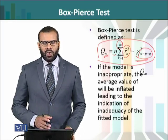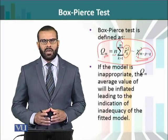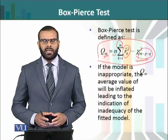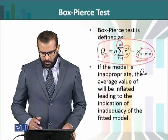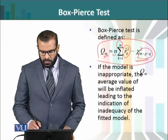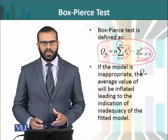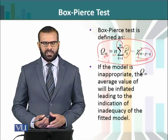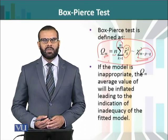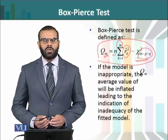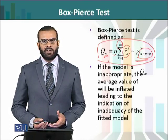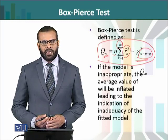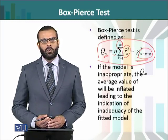اگر model inappropriate ہوگا — یعنی اگر fitted ARMA(p,q) model ایک appropriate model نہیں ہے، اگر fit good نہیں ہے — تو اس صورت میں Qm کی value inflate کرے گی، بڑی value آئے گی، کیونکہ residuals کی autocorrelation magnitude میں بڑی ہوں گی، جس کی وجہ سے Qm کی ایک larger value result کرے گی اور ہم کہیں کہ model inadequate ہے۔ Qm کی value کو ہم chi-square distribution کی standard critical value سے compare کرتے ہیں اور اس کی base پر model کی adequacy پر comment کرتے ہیں۔